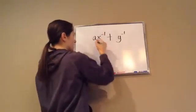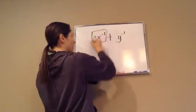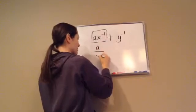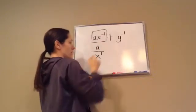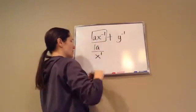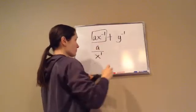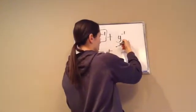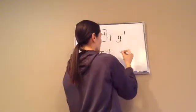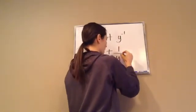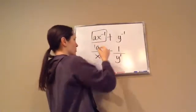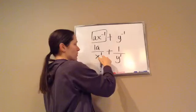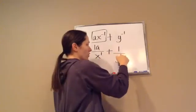So I'm going to work on this problem right here at first. A is still on the top, but this x to the negative 1 becomes x to the 1 on the bottom. And if you want to put a 1, you can, but it's not important. And then we've got plus this y to the negative 1 becomes 1 over y to the 1. So we've got a over x to the 1 plus 1 over y to the 1.